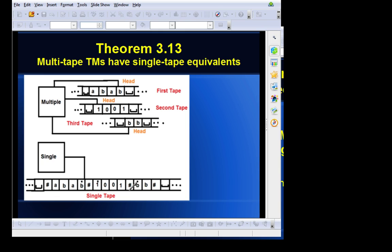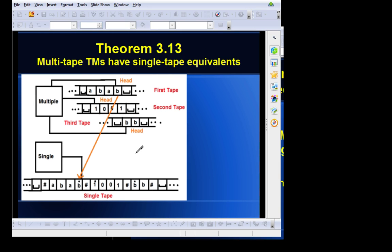So, Sipser writes down Theorem 3.13, which is to prove that multi-tape Turing machines have a single tape equivalent. As you can see from this diagram, each of these heads do in fact correspond to a virtual head value on the single tape. So, you can see that B in the first tape corresponds to B in the single tape in that first section.